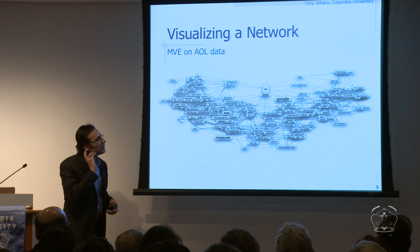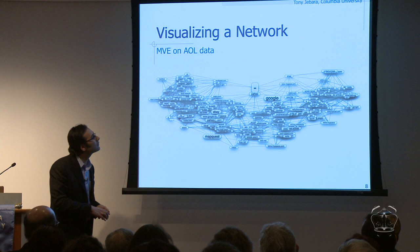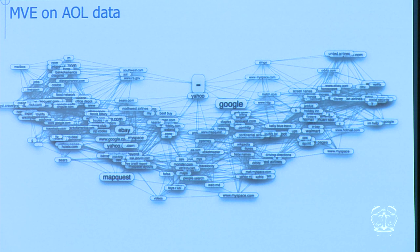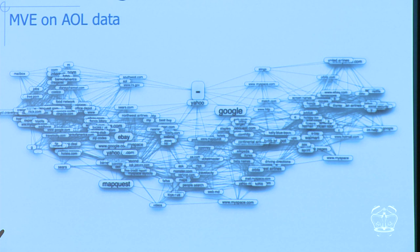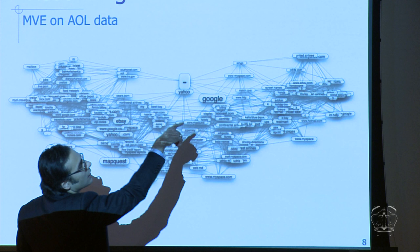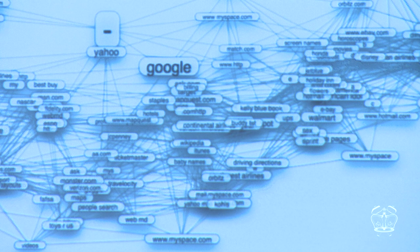Here's one example: we're visualizing some of the websites many of you browse, in 2D — this is actually much higher than 2D, but we've squashed it down. This is the top 500 websites on the Internet, and we used the AOL data to calculate the network. Some interesting things pop out: for example, all the airlines pop up next to each other — UnitedAirlines.com, AmericanAirlines.com, Orbitz.com — laid out close to each other from the AOL data. So we can at least visualize the network.